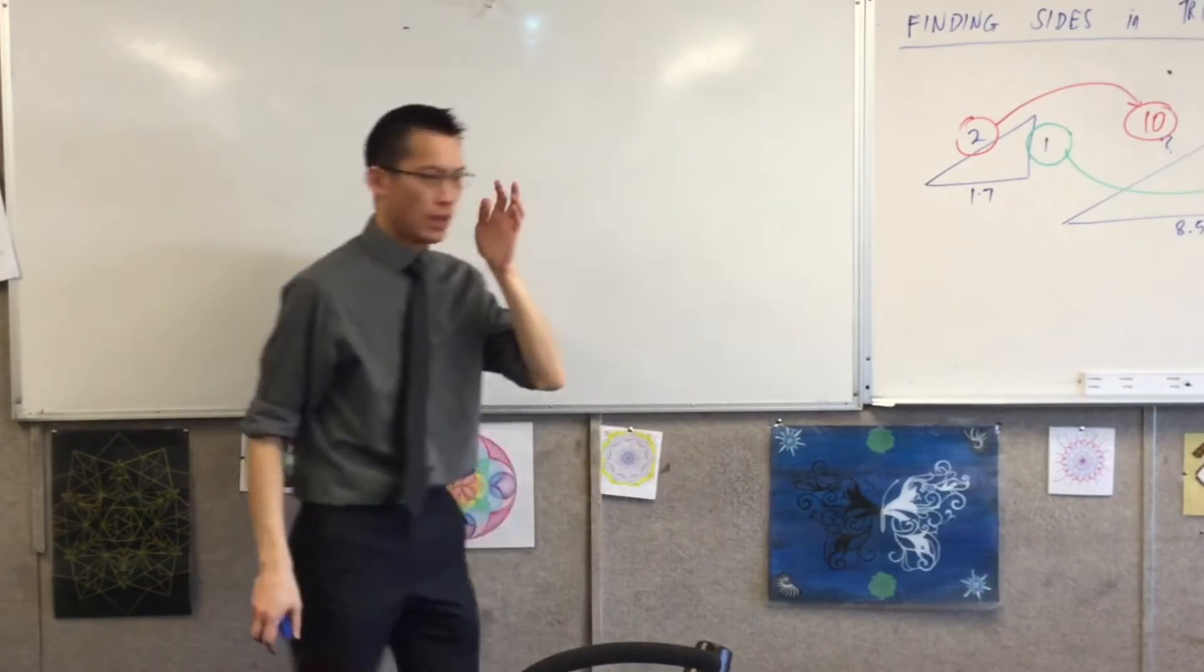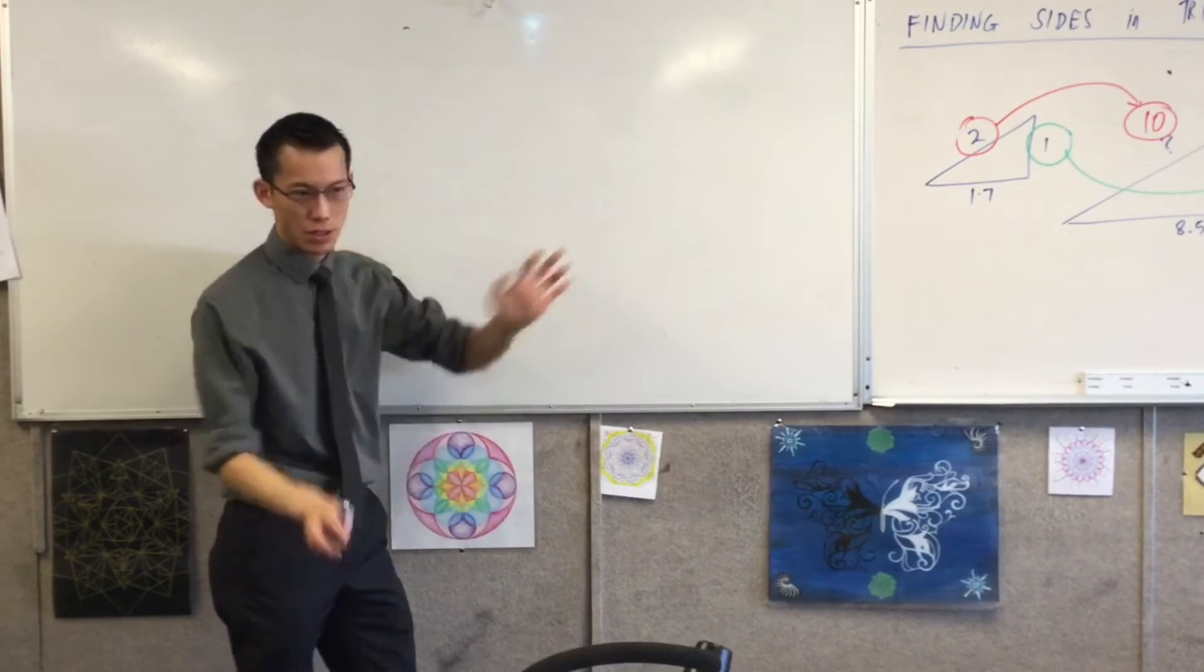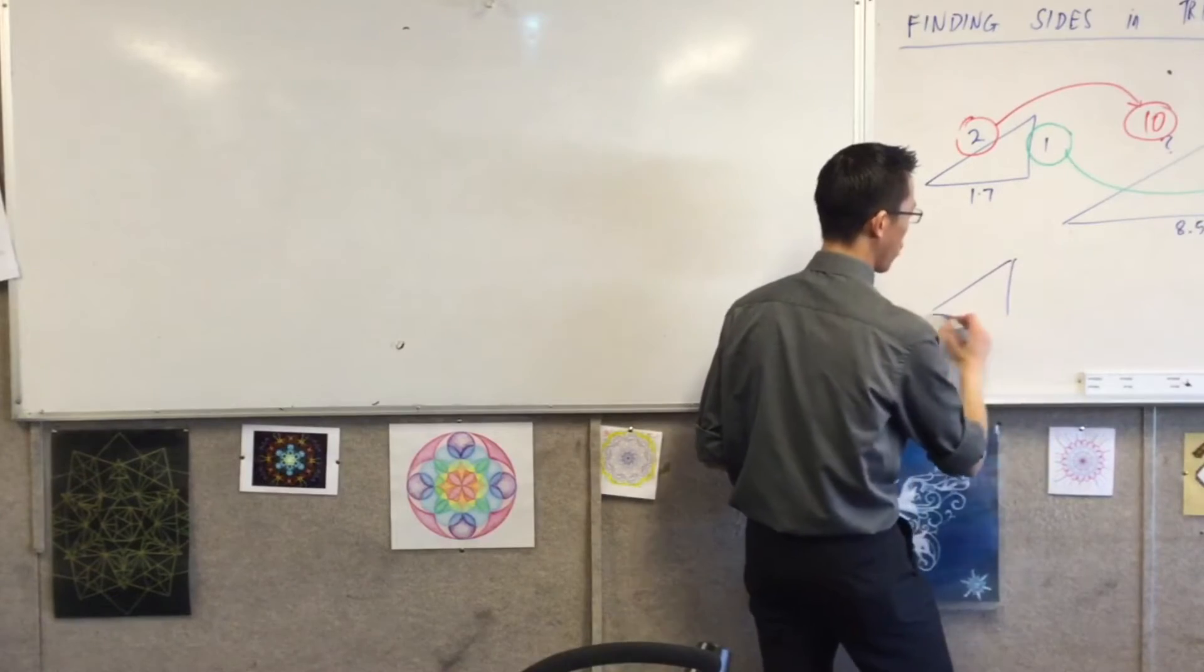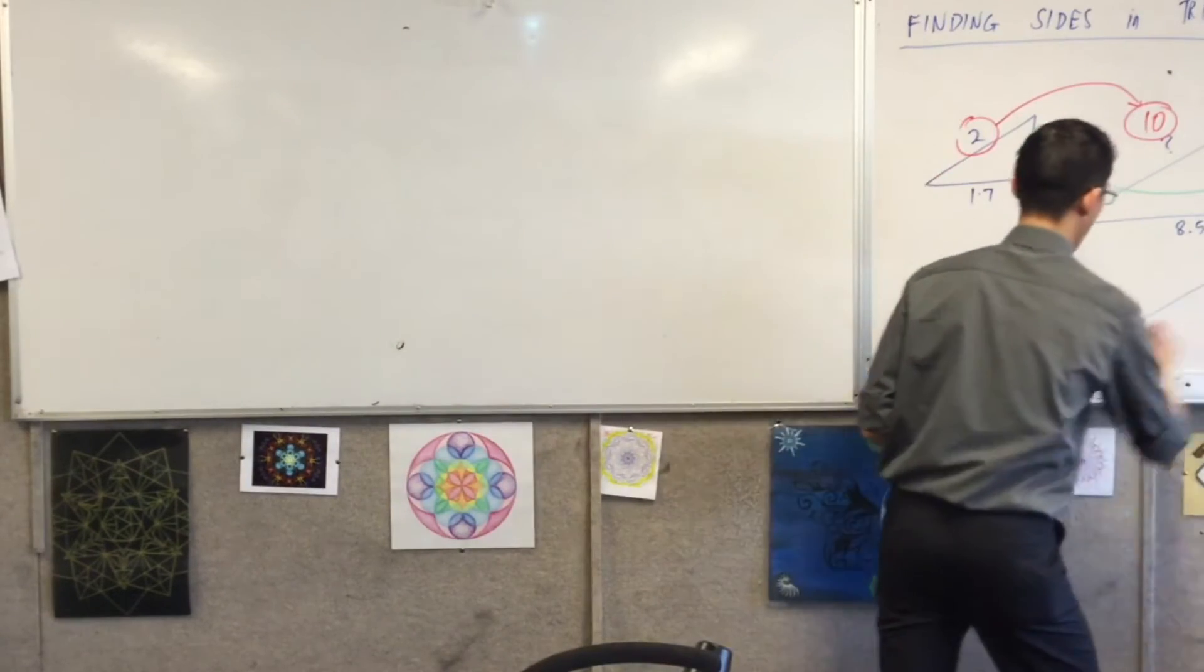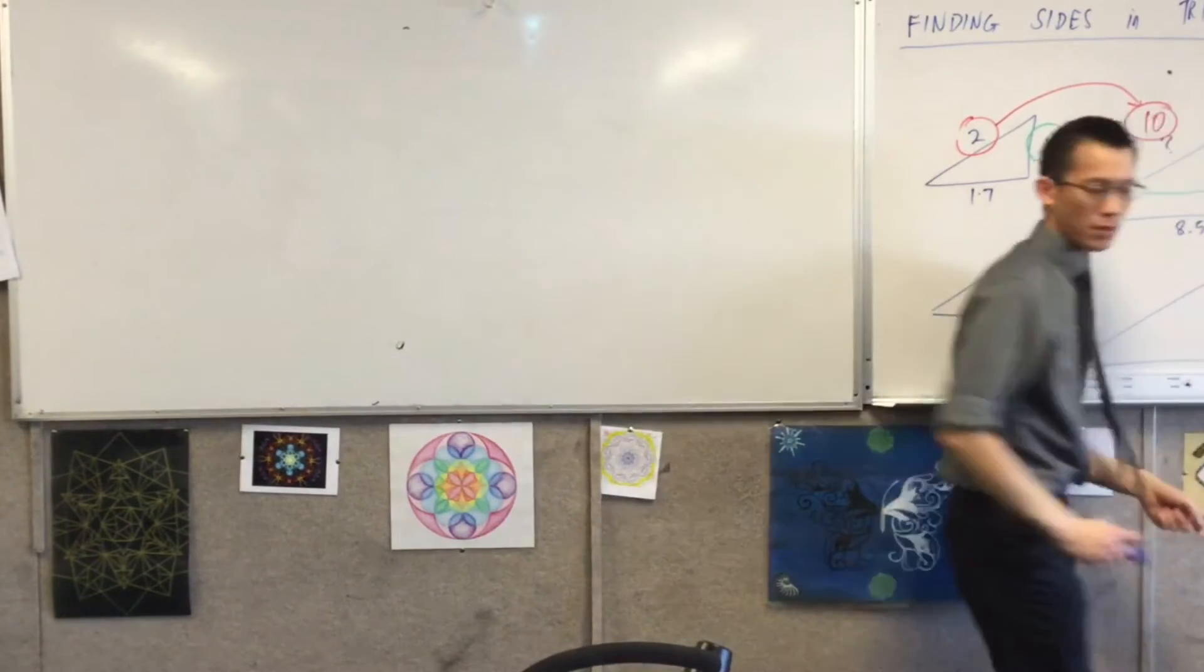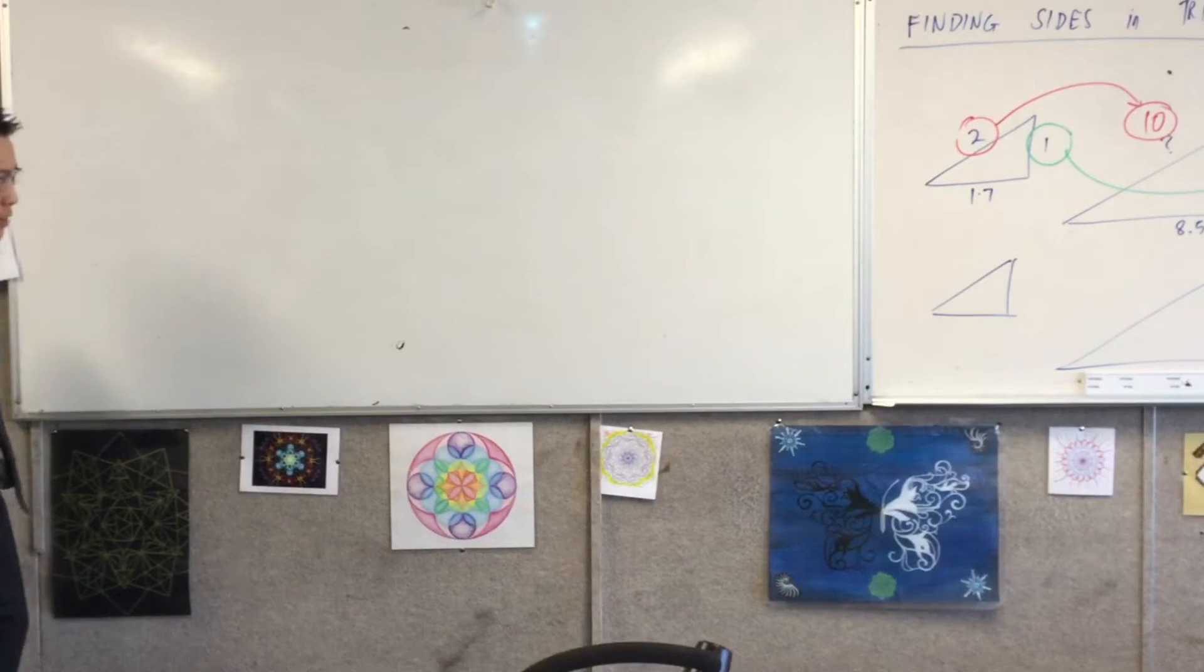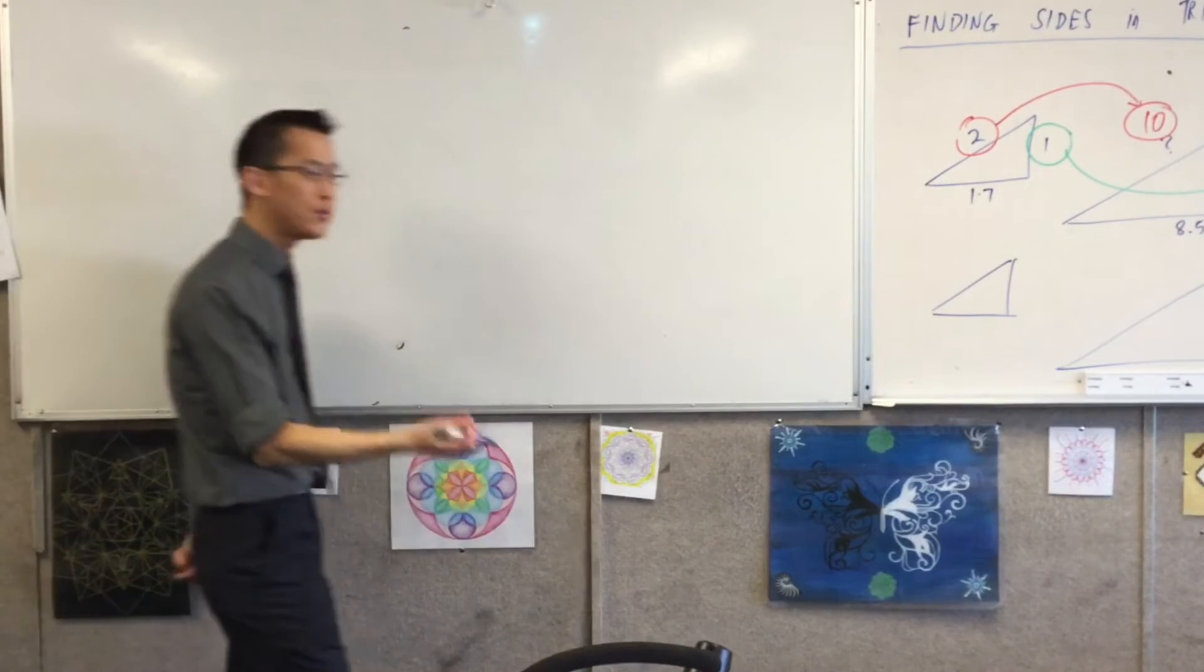Now what I want you to do, redraw the same pair of shapes, but don't put any labels on it. Okay? So if I had the same small triangle over here and the same big triangle over here. Okay? What we have learnt in trigonometry so far,